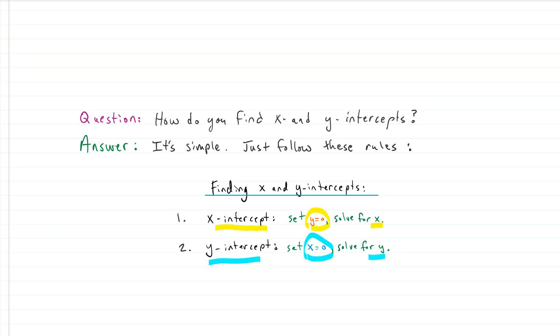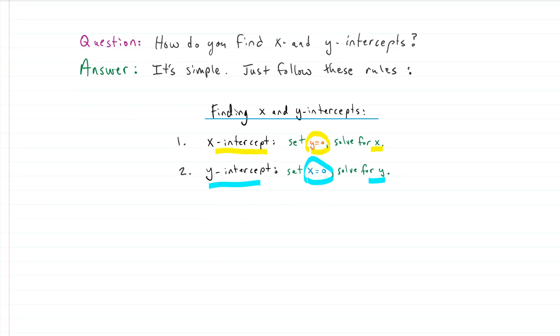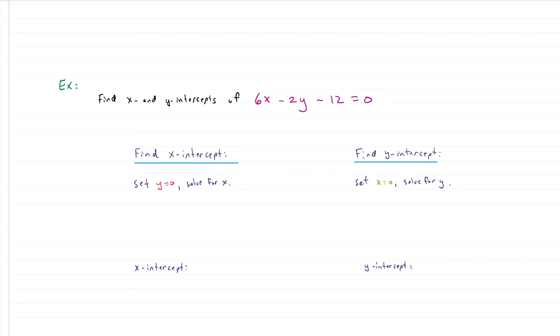So again, when we're wanting to find the x-intercepts, we'll solve for x but we first have to set y equal to zero. When we're finding y-intercepts, we will end up solving for y because that's what we're looking for, right? But we first have to set x equal to zero. So that's it. That's really all there is. Let's do an example.